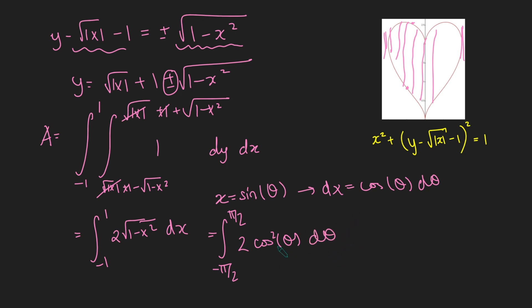And now to evaluate this, this is a pretty standard integral. We're going to use our double angle formula. So we're going to recall that cos of 2x is the same as 2 cos squared x minus 1. So adding 1 on both sides gives me that this is the integral from minus pi over 2 to pi over 2 of cos 2 theta plus 1 d theta.